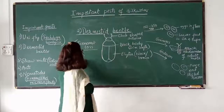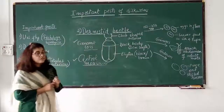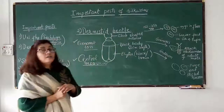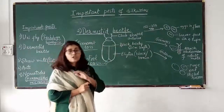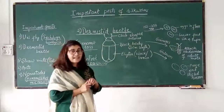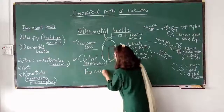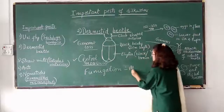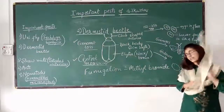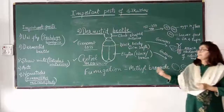Control measures for the domestic beetle include: you should not keep discarded eggs or cocoons near the rearing house. Go-downs and grainages should have doors and windows covered with fly-proof mesh so that insects cannot enter. Fumigation using methyl bromide should be carried out in go-downs and grainages.